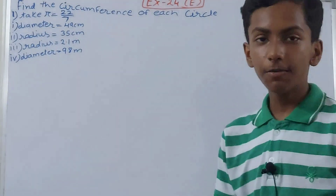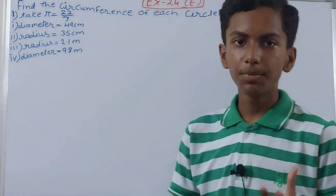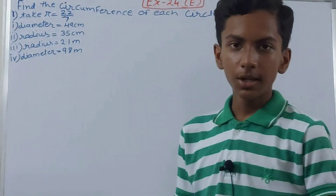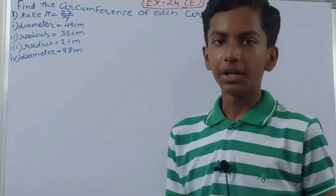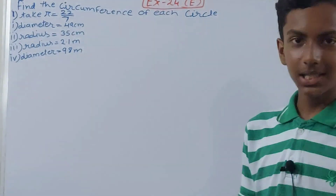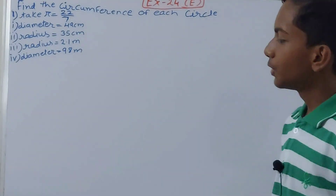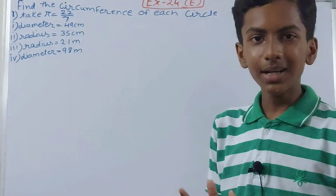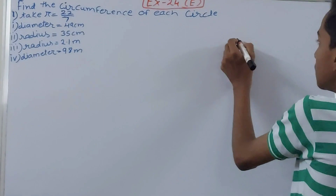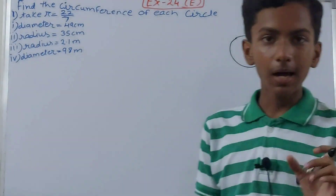So we have to find the circumference of each circle. What is the circumference of a circle? It's simple — for shapes like squares, rectangles, and triangles we have perimeter, and for circles we have circumference. Both are the same thing: the measure of the boundary.